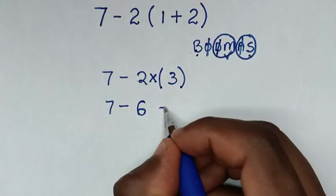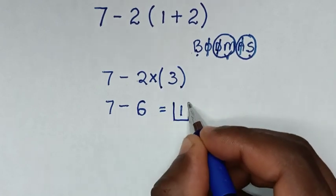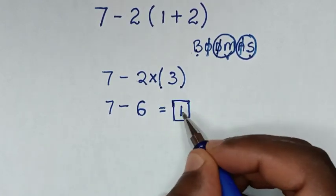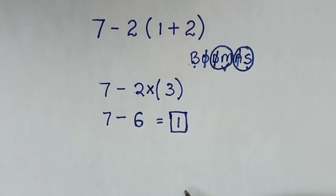So we deal with the subtraction: seven minus six equals one. Therefore, this is our final answer. Thank you for watching. Don't forget to subscribe to my channel.